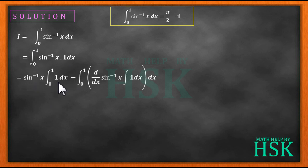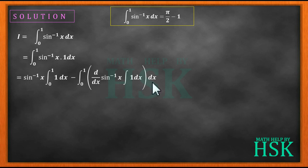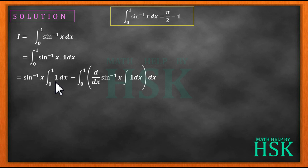Applying the formula of integration by parts and keeping the second function as equal to 1, I can write the value of I as: sine inverse x into integration of 1 dx from limit 0 to 1, minus the integration of differentiation of sine inverse x into integration of 1 dx, integrated with respect to x from limit 0 to 1. Integration of 1 is x, and differentiation of sine inverse x is 1 upon square root of 1 minus x square.